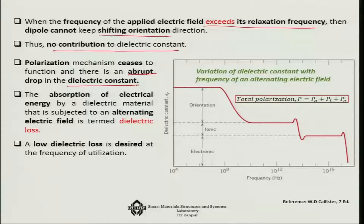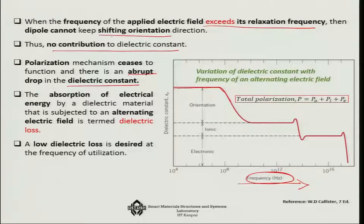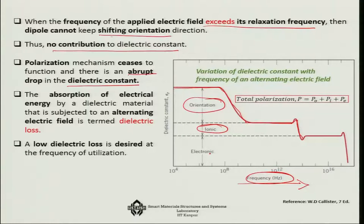As shown in the dielectric constant vs. frequency plot — going from kilohertz to megahertz to gigahertz — the dielectric constant is initially stable, then drops, stabilizes, and drops again. The first to fail is orientation polarization, then ionic polarization, and finally electronic polarization fails at very high frequencies, causing a sharp drop in the dielectric constant. This is known as dielectric loss.